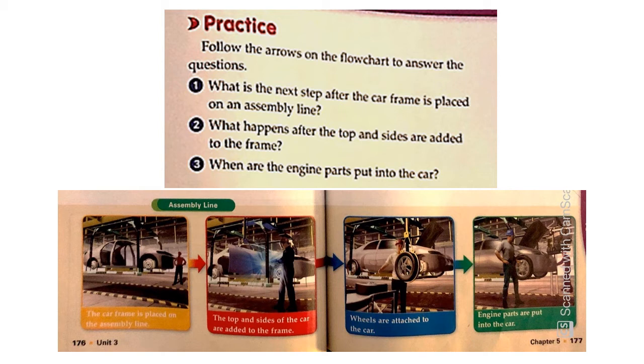The first square has a picture and a caption that says the car frame is placed on the assembly line. Now I know that the question, the first question asked me, what's the next step after this step? So the answer is going to be definitely this one. The top and sides of the car are added to the frame. So once the frame of the car is placed on the assembly line, the tops and sides are added to this frame.